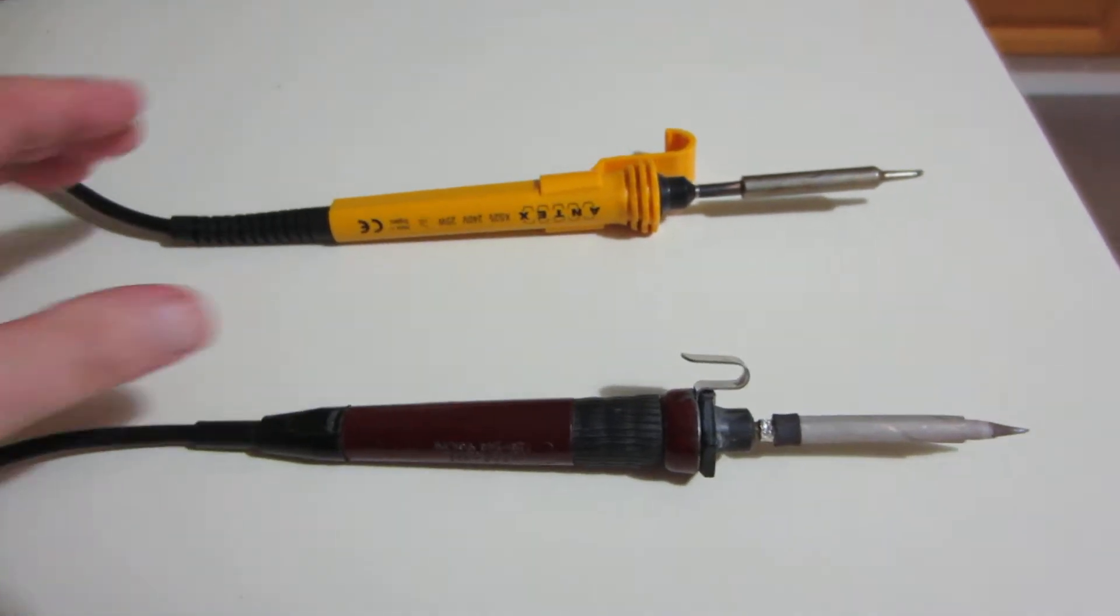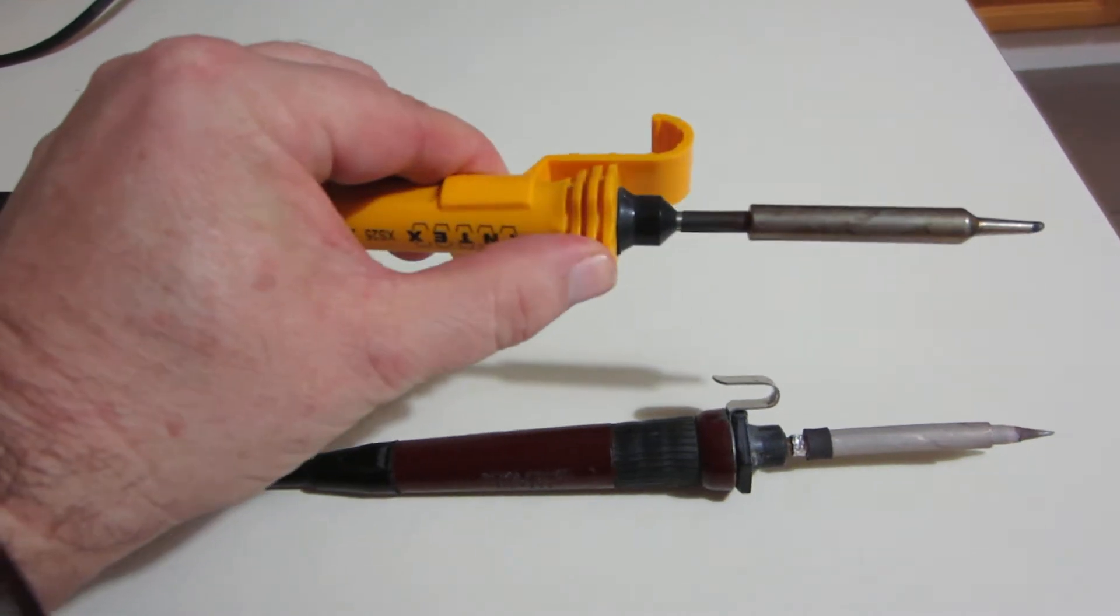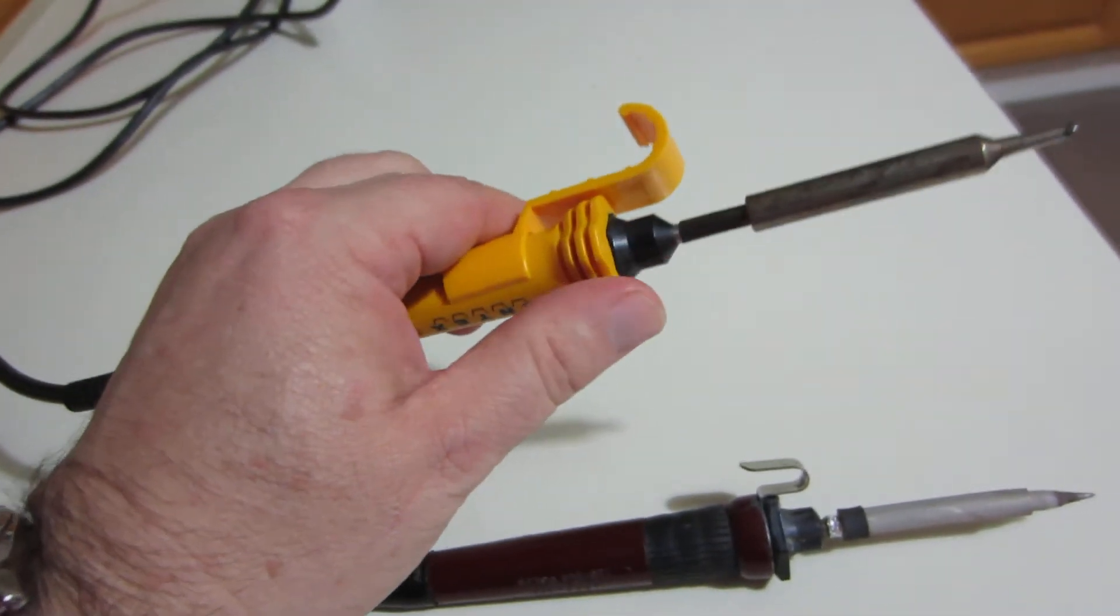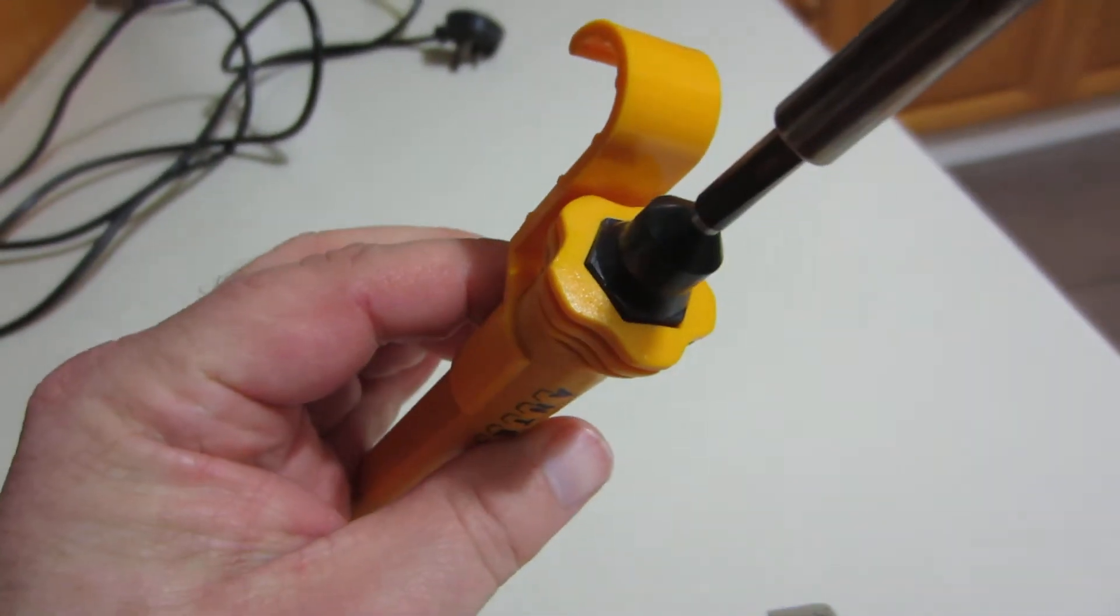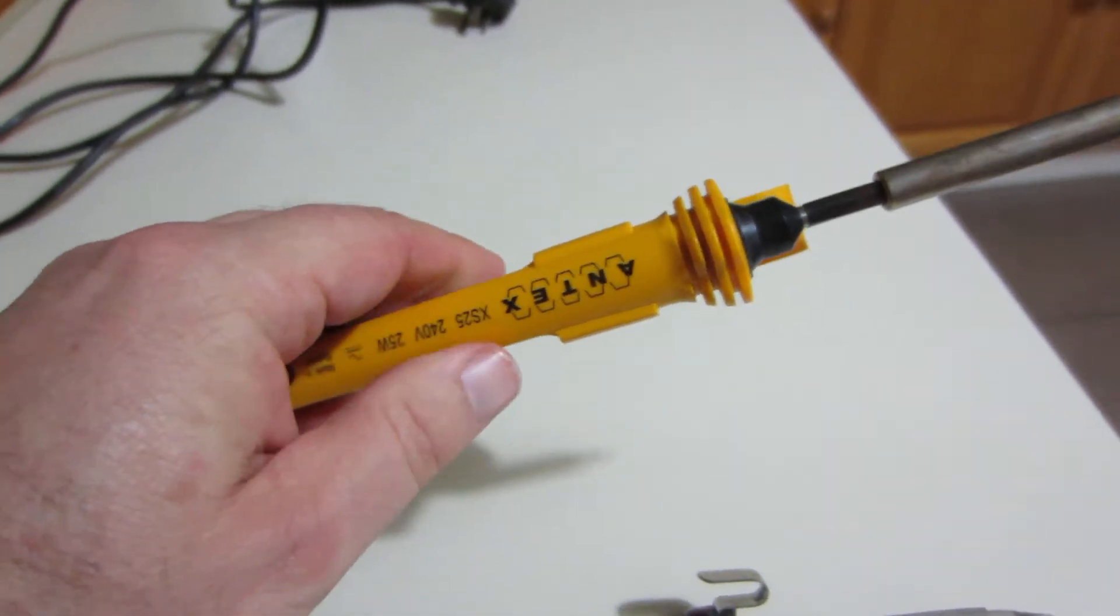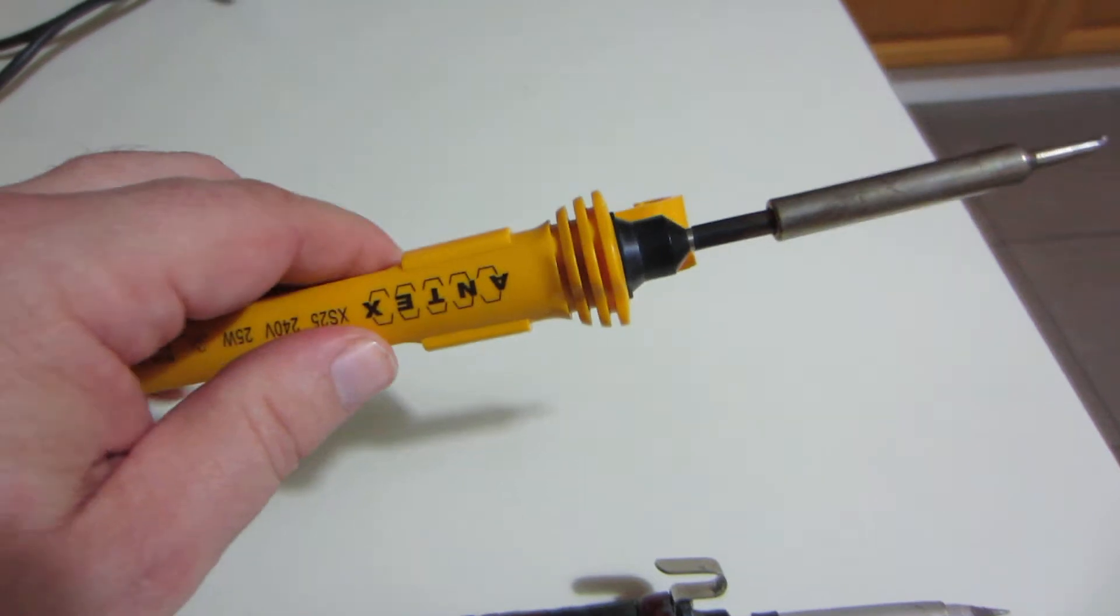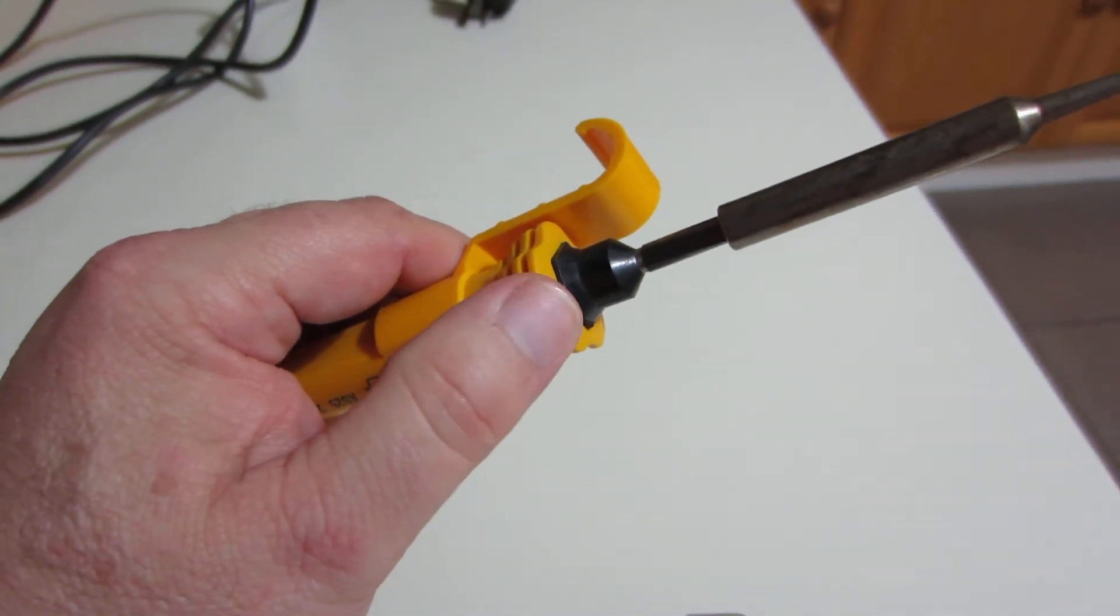The newer iron is a little bit different. Basically the end of this unscrews and the end of the element unit is clamped in, so the screws are gone. As I mentioned, shortly after I bought this iron in 1981, they moved over to a more modern design which is similar to this, and it's been very difficult to get the parts for the older irons.